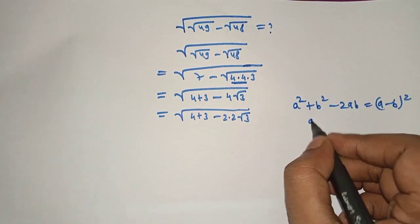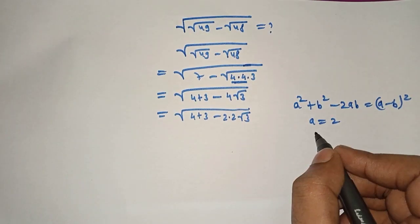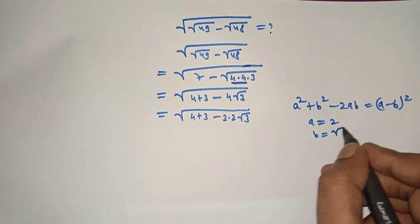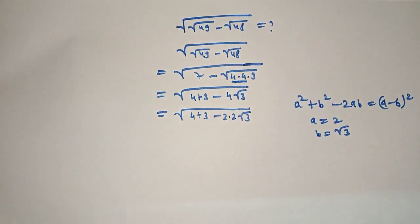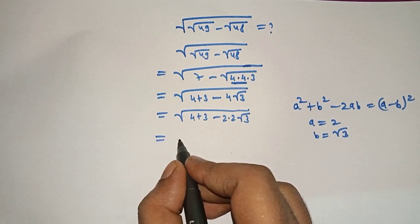Where a equal to 2 and b equal to square root of 3. So it can be written as...